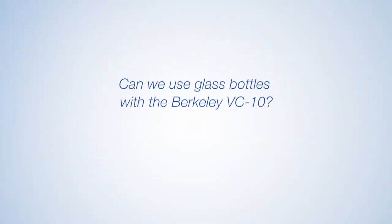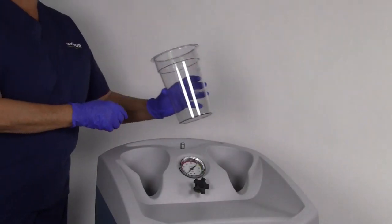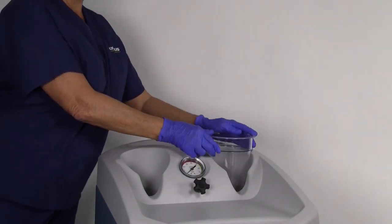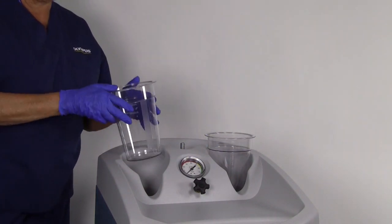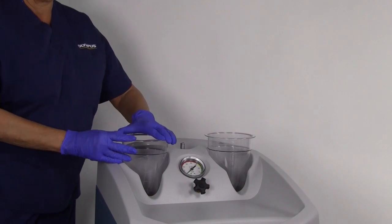Can we use glass bottles with the Berkeley VC-10? The canister receptacles can accommodate different size collection canisters or bottles. However, usage of glass is not recommended due to the potential hazards of breakage.